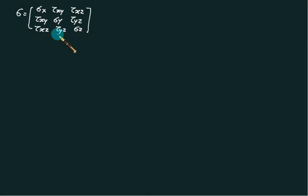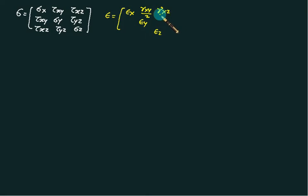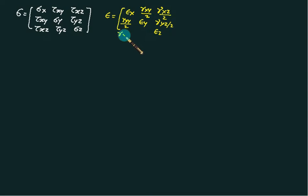Similarly, we have a strain matrix. The diagonal elements are epsilon_x, epsilon_y, epsilon_z, and all tau terms are replaced by gamma divided by 2. So the off-diagonal terms are gamma_xy/2, gamma_xz/2, gamma_yz/2, gamma_xy/2, gamma_xz/2, and gamma_yz/2.